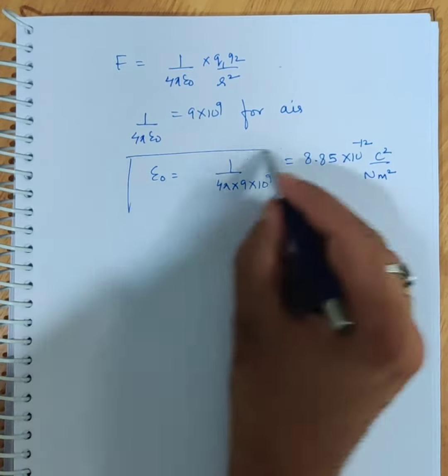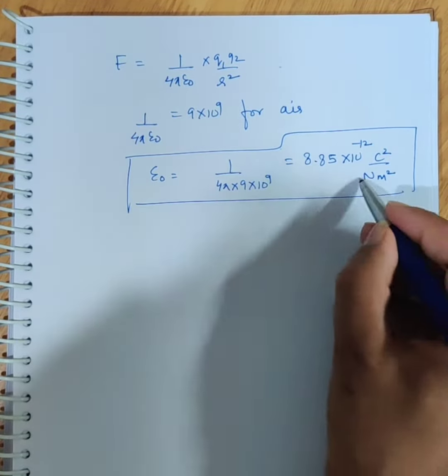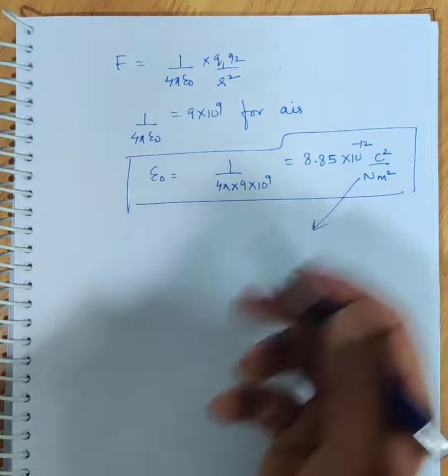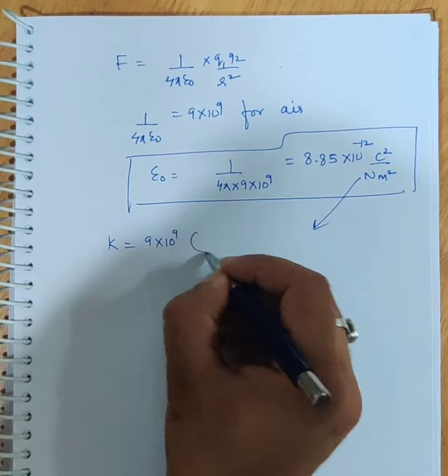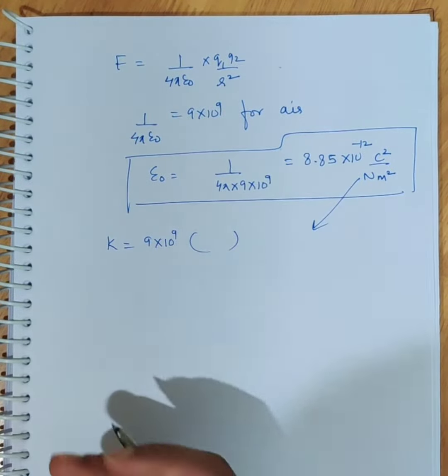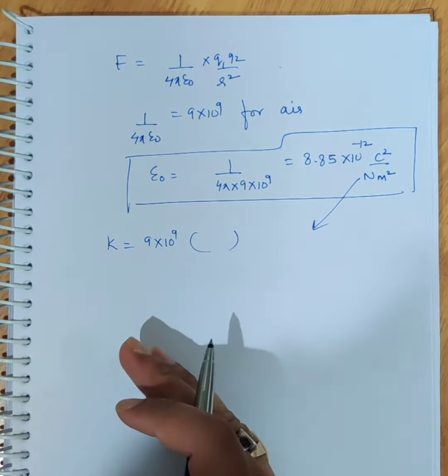And this number is very important and knowing its unit is very important. But k's value is quite sufficient, which we've told is nine times ten to the power nine. We haven't given its unit. Second thing is you don't need to learn such units because you can derive the unit from the formula.